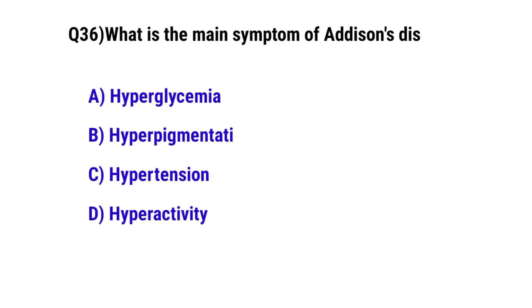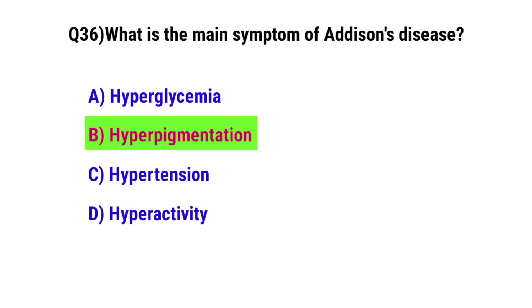Question number 36. What is the main symptom of Addison's disease? The correct option is B: Hyperpigmentation.